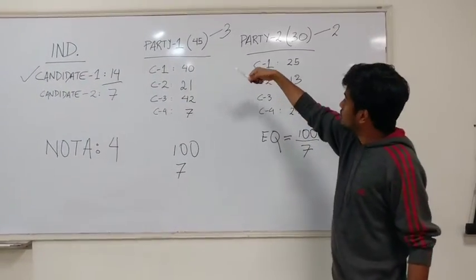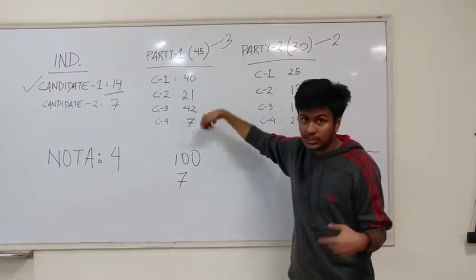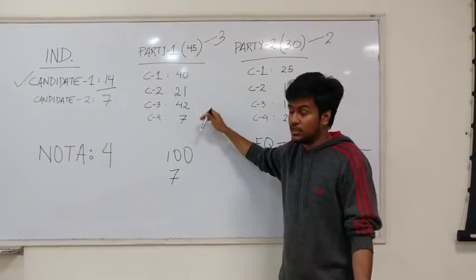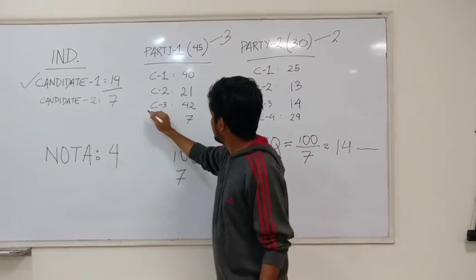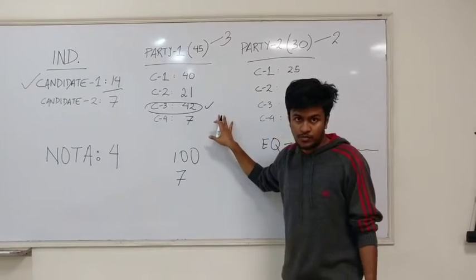Now with regard to party 1, they've gotten three people in the house. How do you determine which three people get in? That's where you look at the total number of votes received. In this case you have candidate 3 who's gotten 42 votes as the first person from party 1 who makes it to the house.